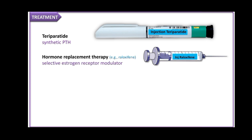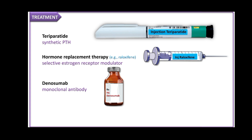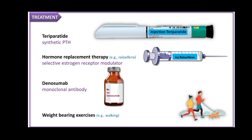Hormone replacement therapy such as raloxifene, a selective estrogen receptor modulator, is useful in post-menopausal women, but should be used short-term as long-term use can result in stroke or clot formation. Denosumab, a monoclonal antibody, reduces the formation, function, and survival of osteoclasts. Patients are also advised to perform weight-bearing exercises.